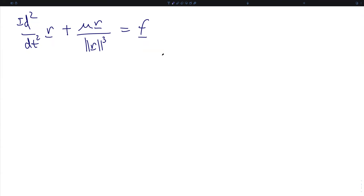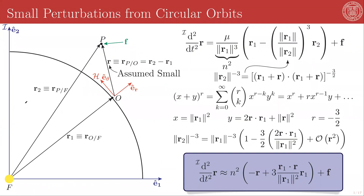The first thing we will consider using this new framework are small perturbations from circular orbits. We will assume a circular reference orbit with a reference point O, which will become the coordinate origin of a new reference frame called H, known as the Hill frame or the Euler-Hill frame. The Hill frame has as its first unit direction E-hat-r, along the direction of the orbital radius vector of the reference orbit, pointing from the central body F to the coordinate origin O. We will call this vector R1, equivalent to R_O rel F.